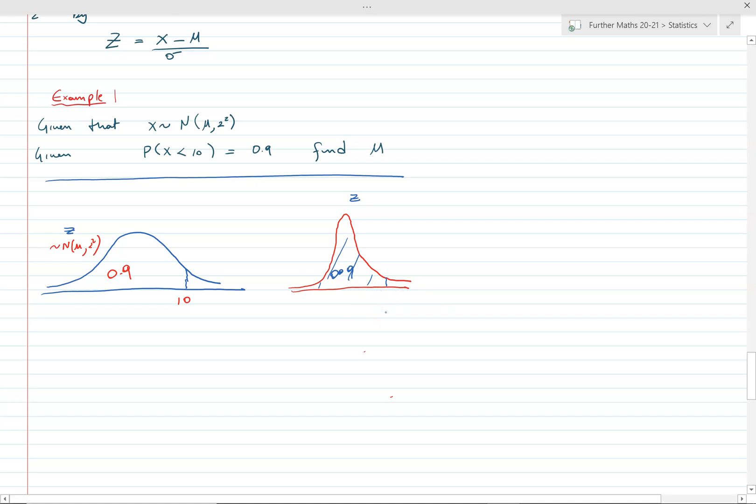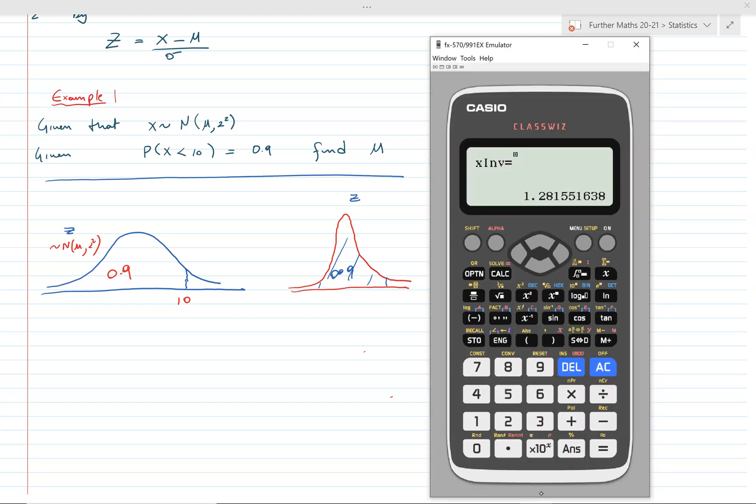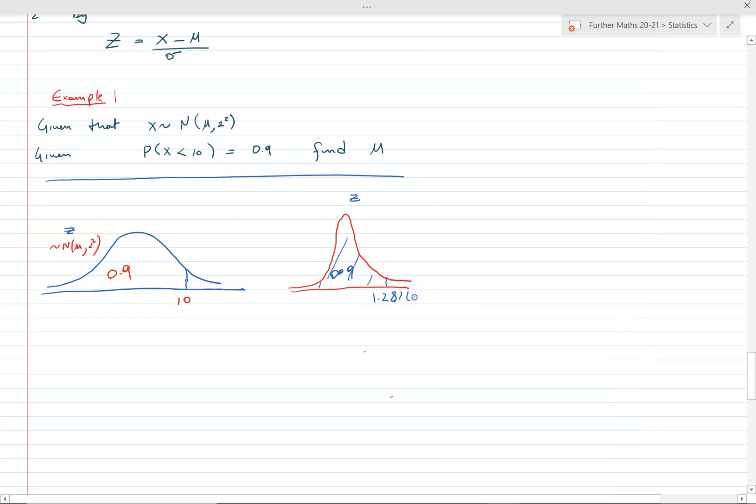We can get the z value for the particular z value where 90% is below it. We go to menu 7 and it's inverse CDF. I've put the numbers in already here: 0.9, the standard deviation is 1 and the mean is 0. That gives us 1.28155, or 1.2816 to five significant figures. That should be enough, or use it memory on your calculator.